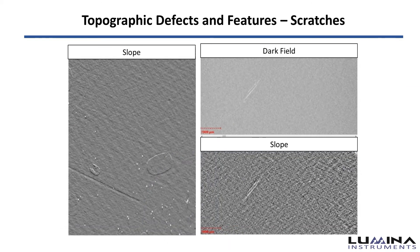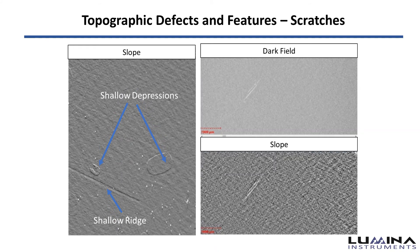Topographic defects and features are readily identified using the slope signal. These defects include shallow depressions, shallow ridges, and scratches.